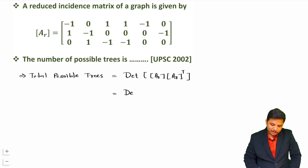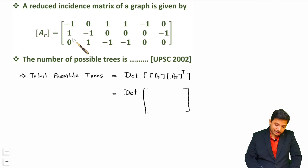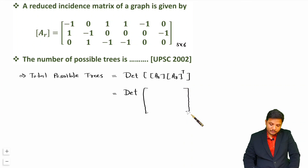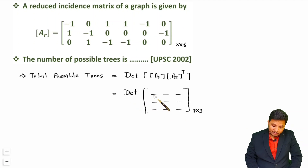You should know the shortcut method to compute Ar times Ar transpose. Here Ar is a 3 by 6 matrix, so Ar transpose is a 6 by 3 matrix, and their product will be a 3 by 3 matrix with 9 elements total.